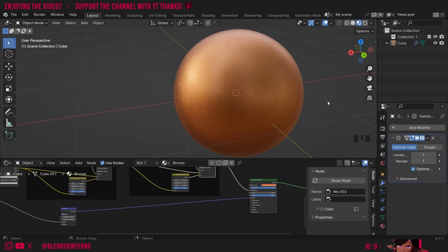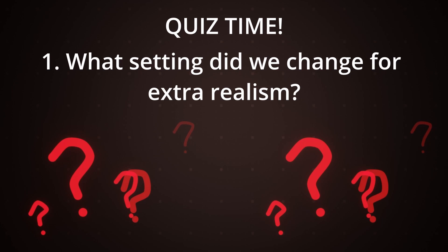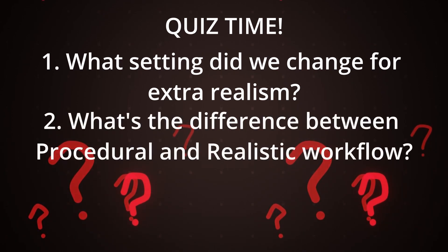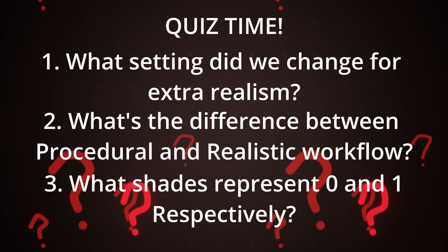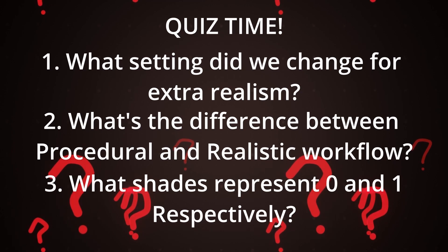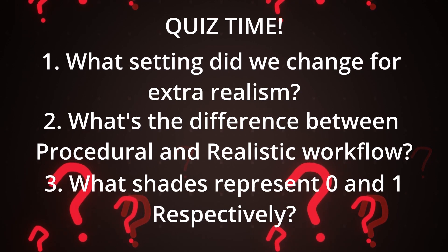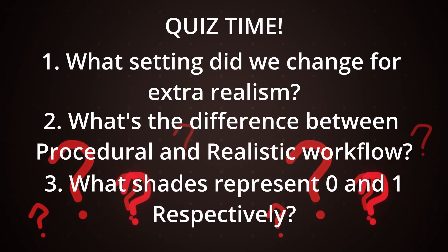Now let's have a quick quiz to cover some of the things we learned today. Number one: what commonly unused setting did we change for extra realism? Number two: what's the difference between the procedural workflow and the realistic image texture one? Number three: what shades or colors represent zero and one respectively when working with the Bump node and the Roughness node? Make sure to pause the video and take time to answer the questions. The answer to number one: this setting was called the IOR, which stands for Index of Refraction. We used the actual physical index of refraction for bronze to take our reflections up a notch in realism.